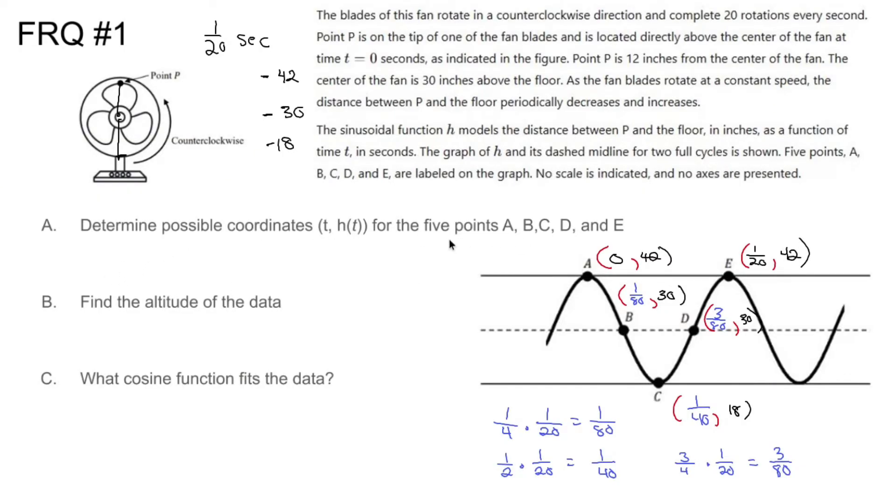Determine the possible coordinates for A, B, C, D, and E. Well, A ended up being (0, 42). B ended up being (1/80th, 30). C ended up being (1/40th, 18). D ended up being (3/80ths, 30). And E ended up being (1/20th, 42). Now again, these are all possible points. Technically, there's an infinite amount, but I think most people would rather start out with zero. I think that's the best way to go. So problem A, done.